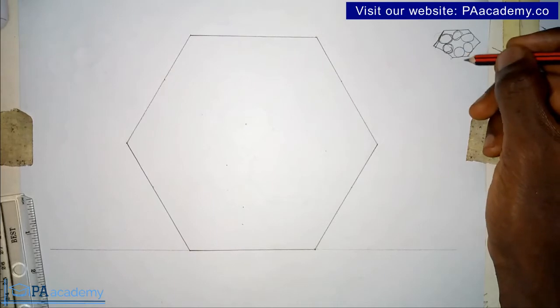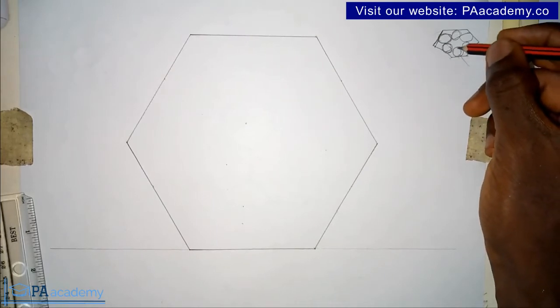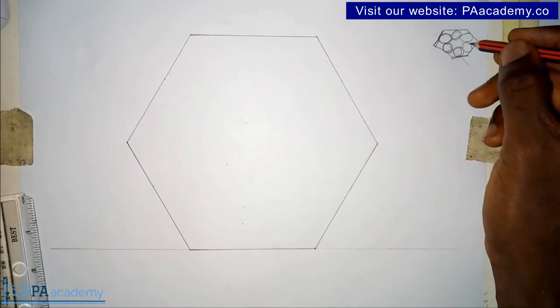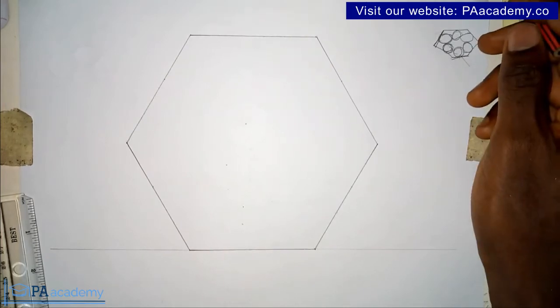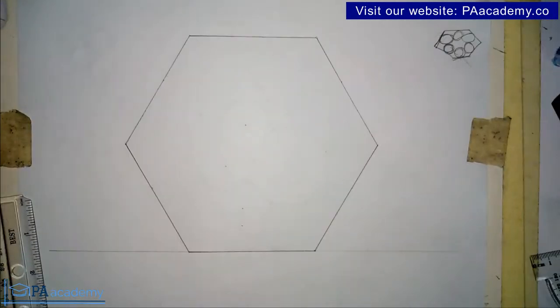If you look at this particular circle, for example, this one, this particular circle is touching this side and it's touching this circle here on the right and this circle on the left. So I'm going to be showing you how to go about it.